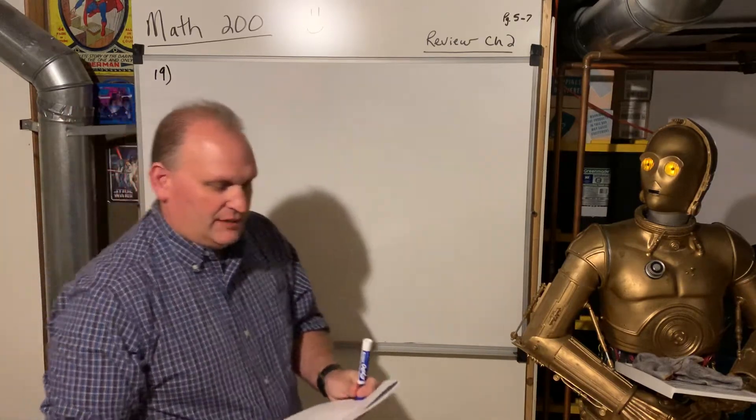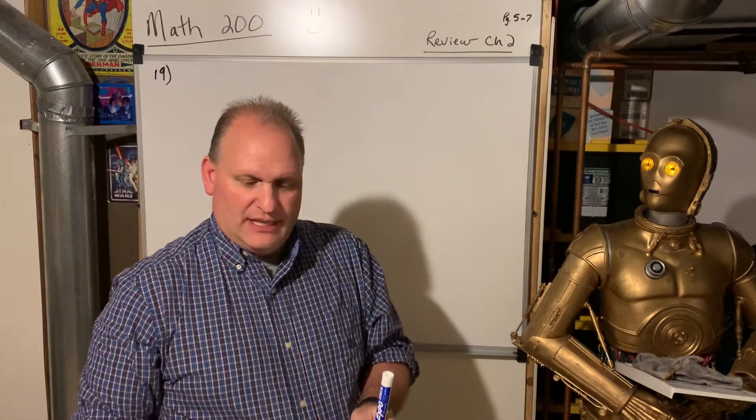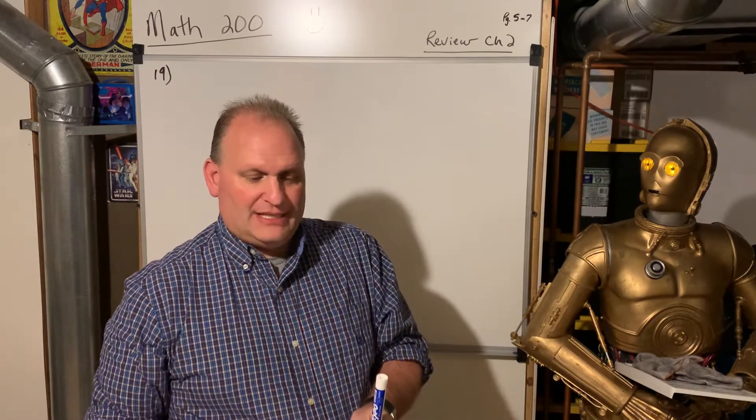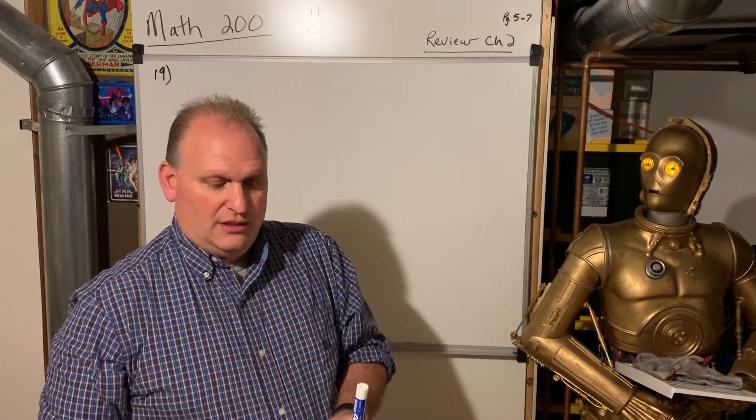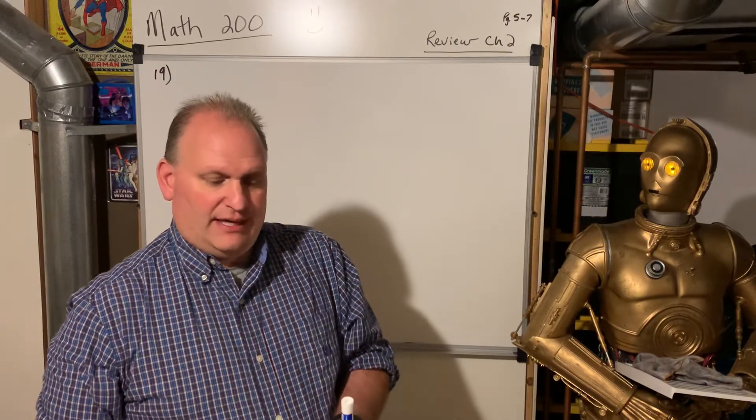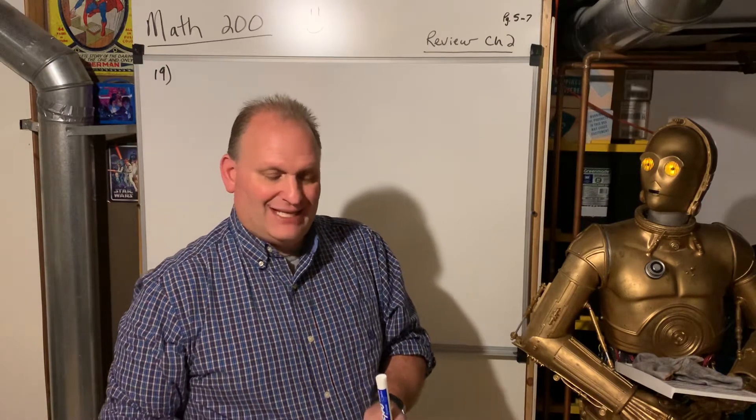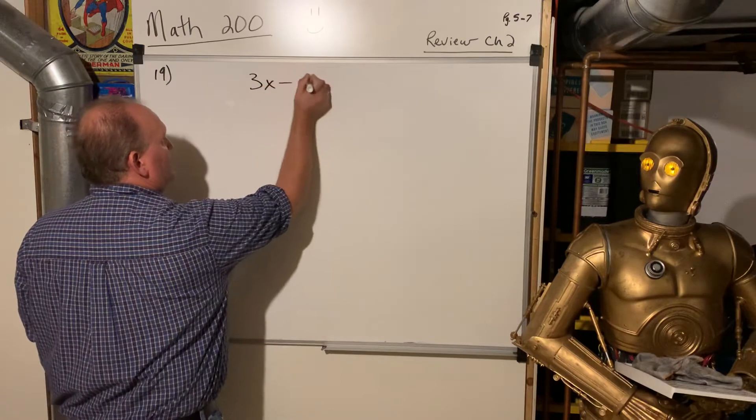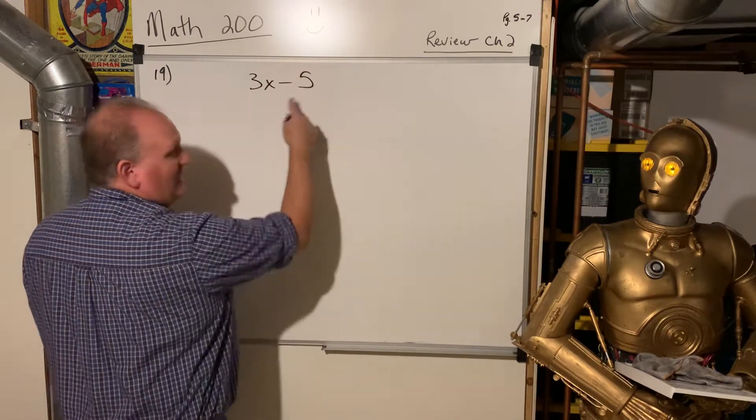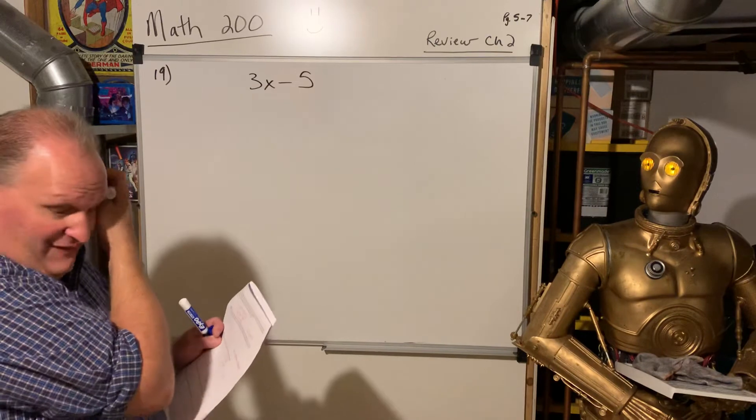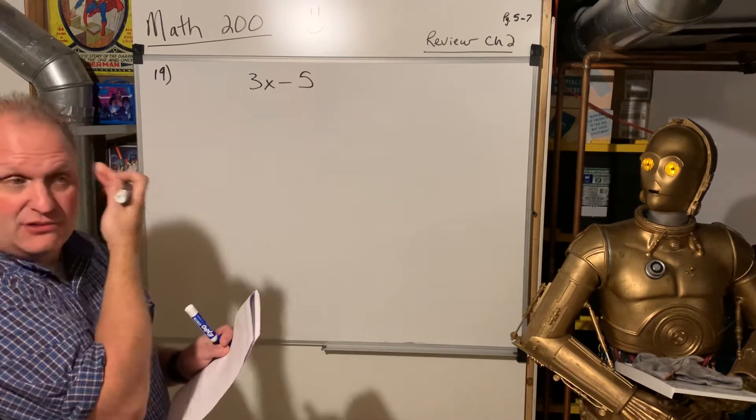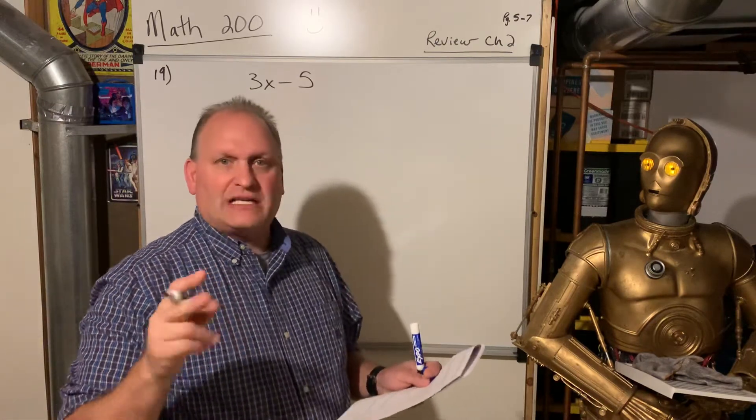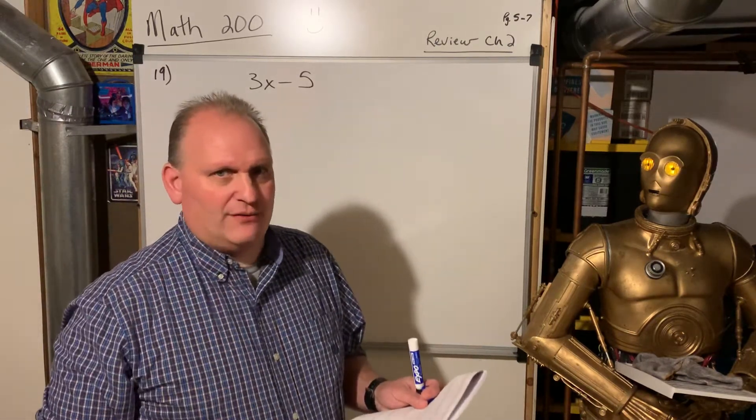Jocelyn is thinking of a number n, and she wants her sister to guess it. Her first clue is that 5 less than 3 times the number is between 1 and 7. Let's read that again. 5 less than 3 times the number. So that means 3x minus 5. The minus 5 has to come second. You can't put it first. If you say 5 minus 3x, that's incorrect. Because subtraction and division are not commutative.